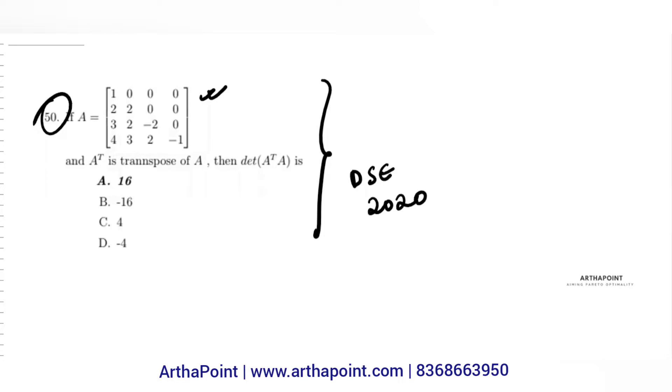The matrix that is given to you is a lower triangular matrix, and now what it is asking is to go ahead and find the determinant of this. Now see that determinant of two matrix A into B is simply...